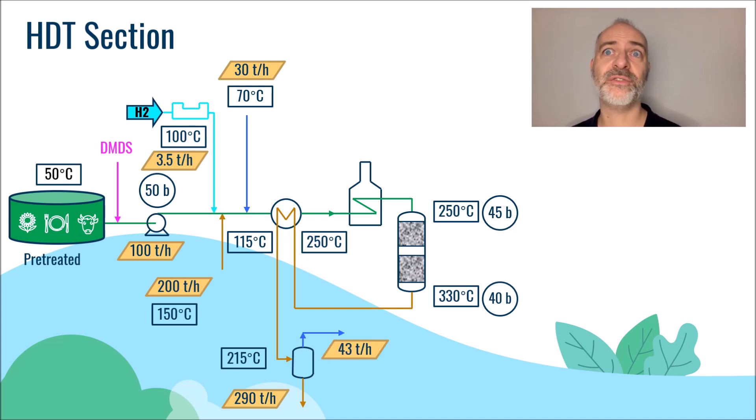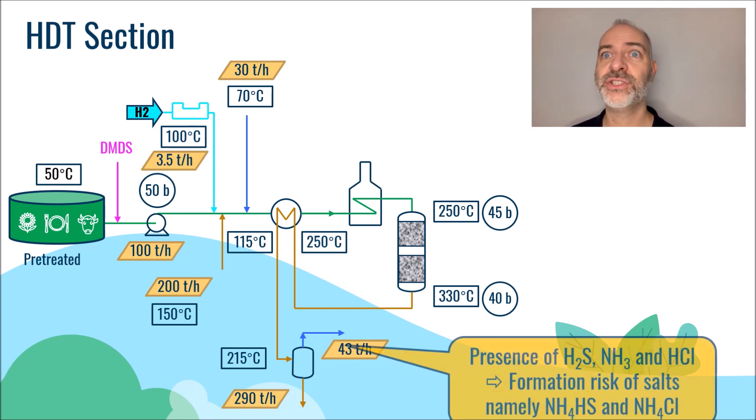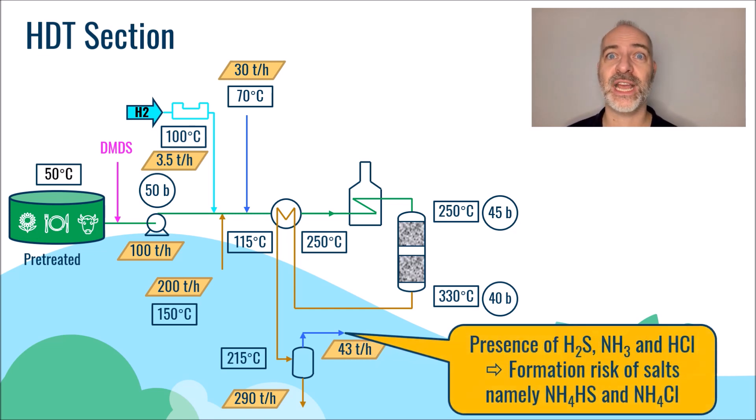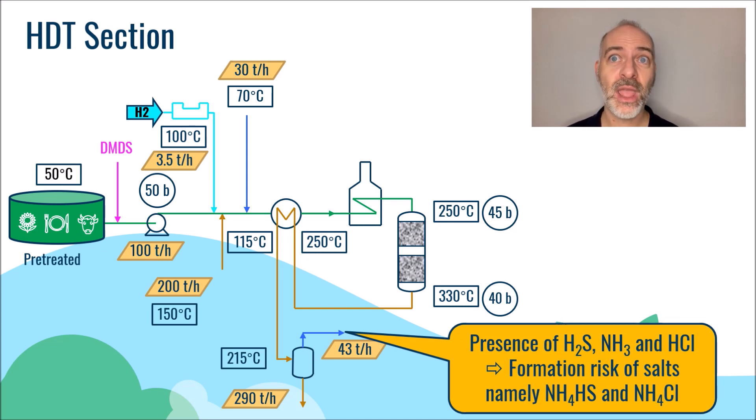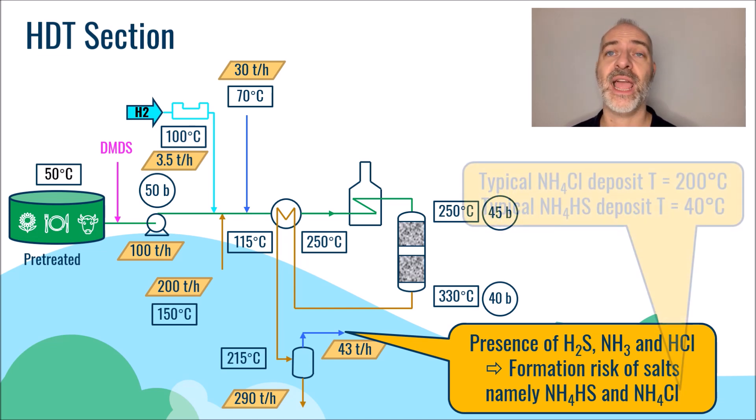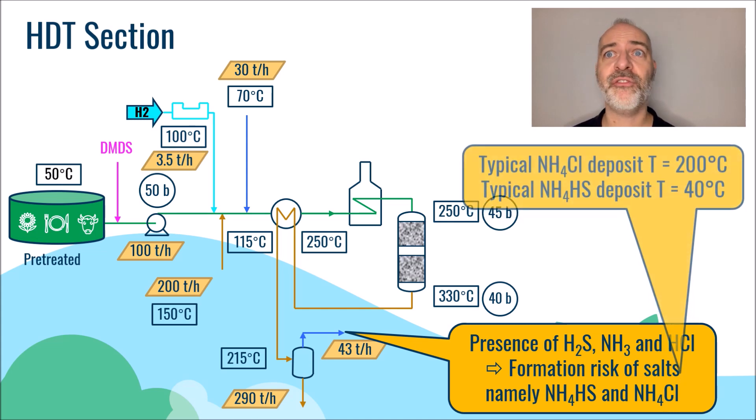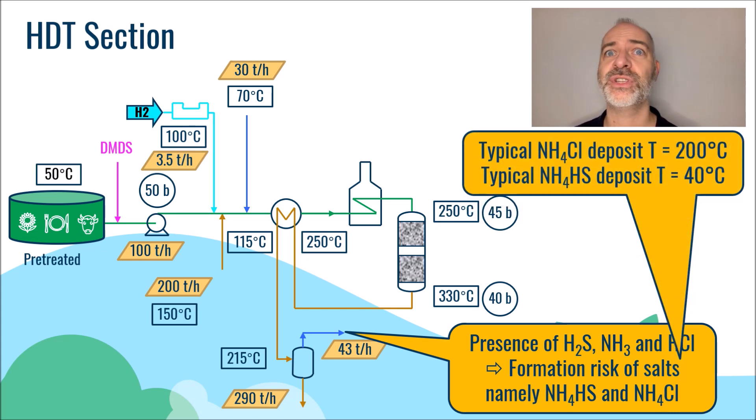Due to the presence of H2S in the gas phase because of the sulfide phase of the catalyst, but also ammonia due to the fact that the nitrogen of the feed has been transformed into NH3, there is a risk of formation of salt of NH4-HS, but also and especially NH4-Cl because there is also chlorine in these feeds. These salts of NH4-Cl and NH4-HS will typically form at temperatures of 200 degrees C and 40 degrees C respectively.